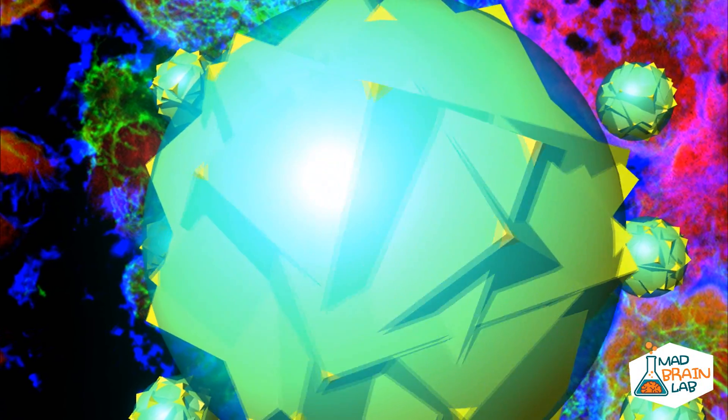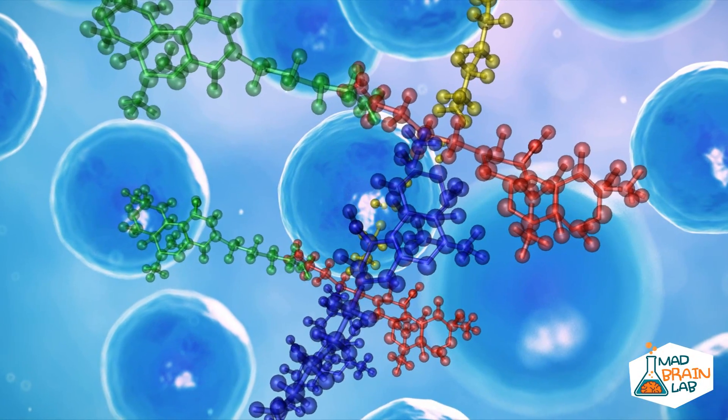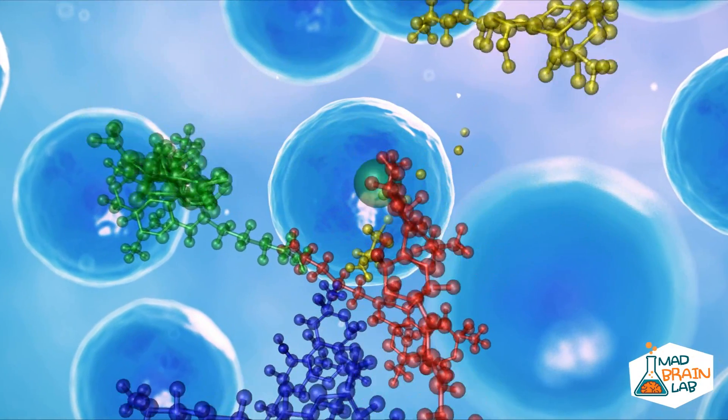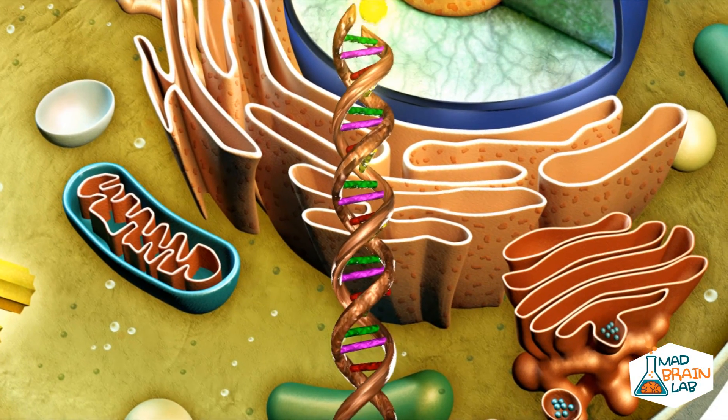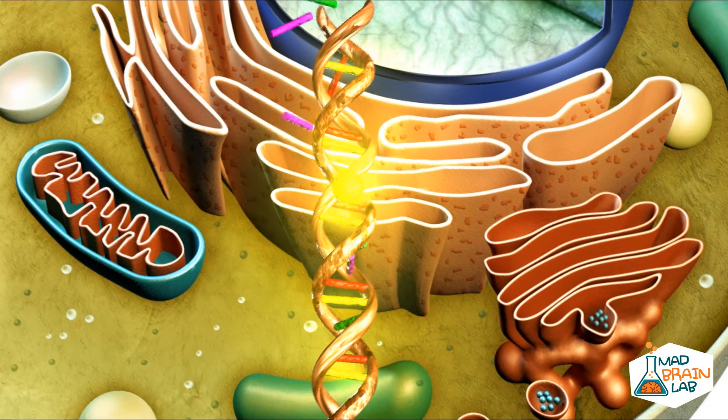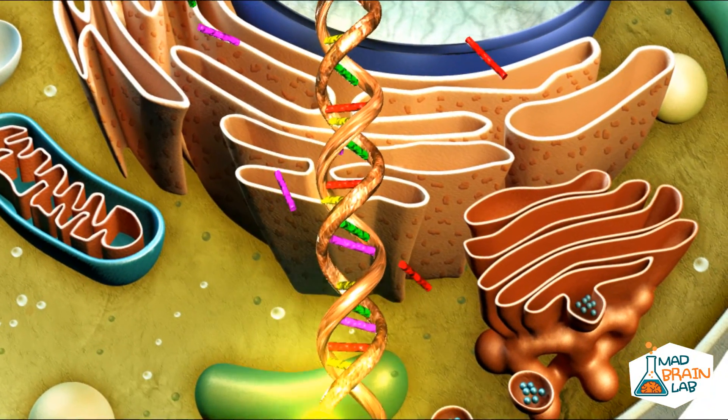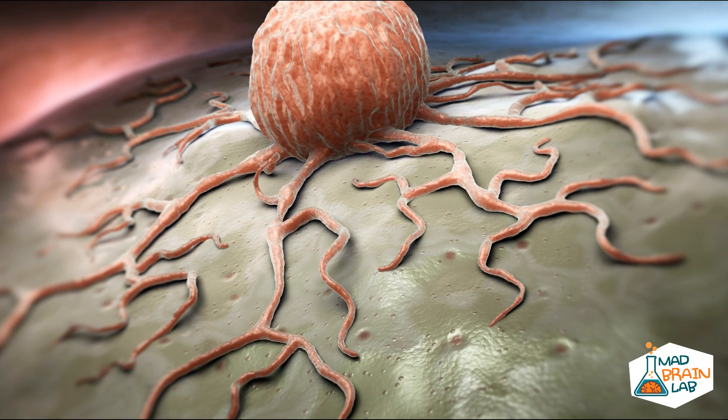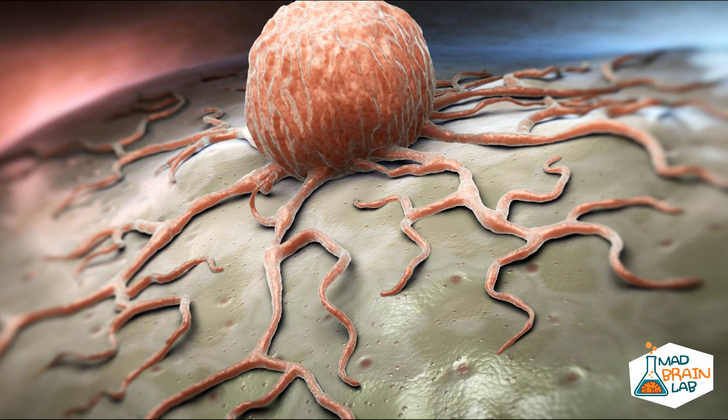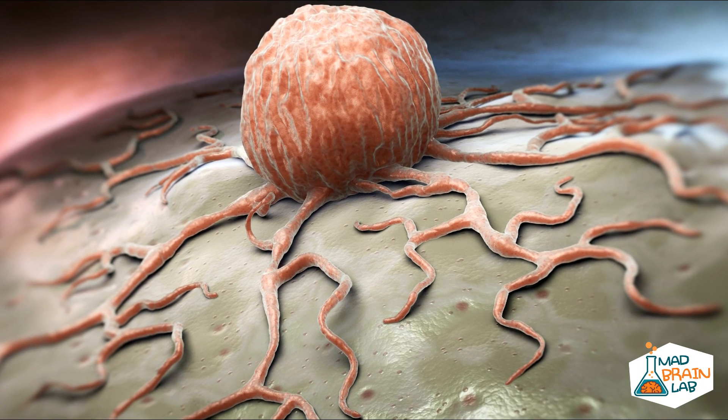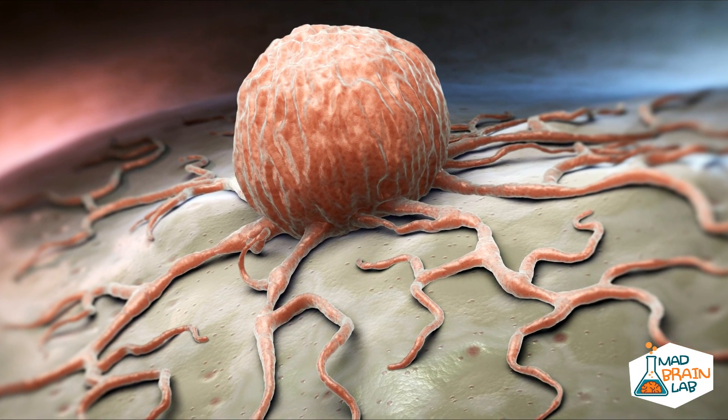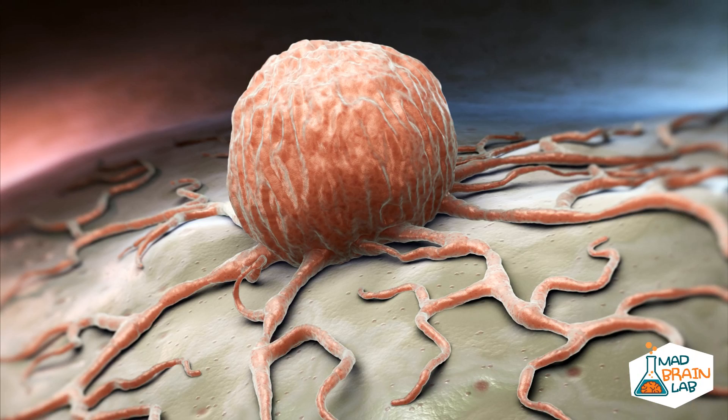One phenomenon responsible for accelerated death and cancer is free radicals. These are oxidative molecules that rip electrons from proteins, DNA, and complex molecules. Free radicals are metabolic byproducts. When DNA is damaged by free radicals, cell death or even cancer results from this because the cell building plan is damaged.